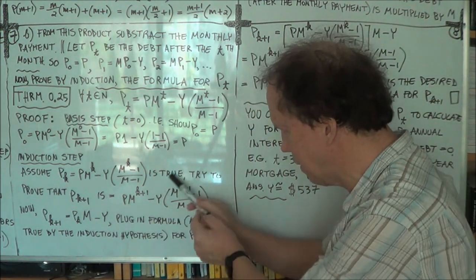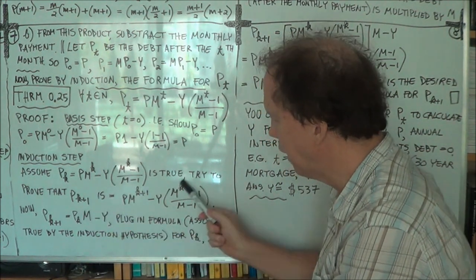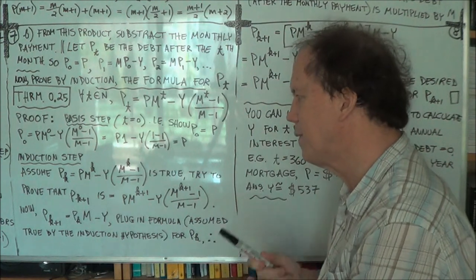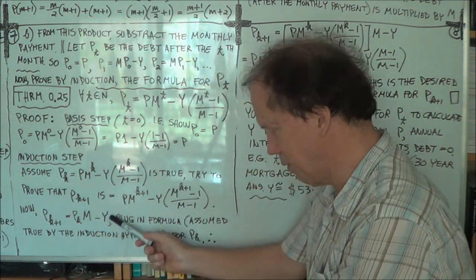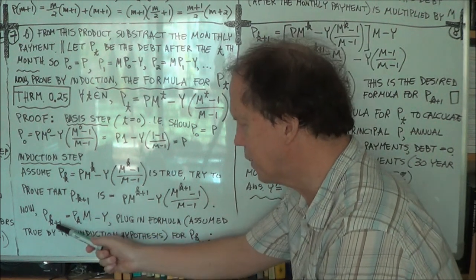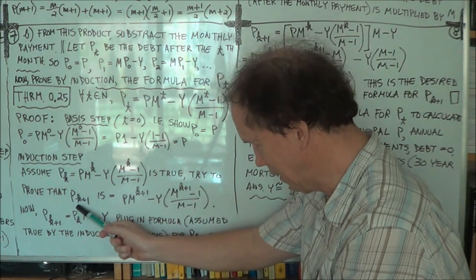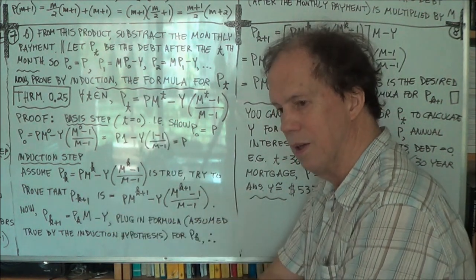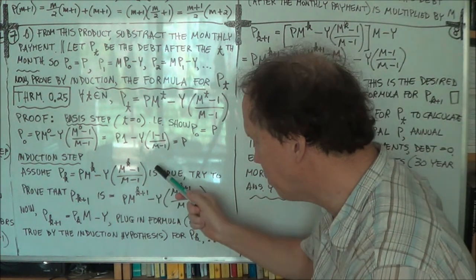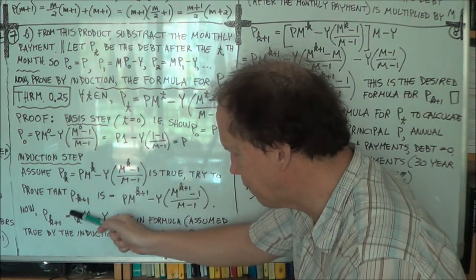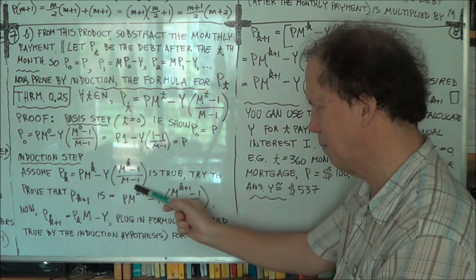We have a formula for P of K, so we plug this into P(K), multiply by M, and subtract Y. Hopefully the result we get will equal the formula for P of K plus one — that's what we're heading towards.